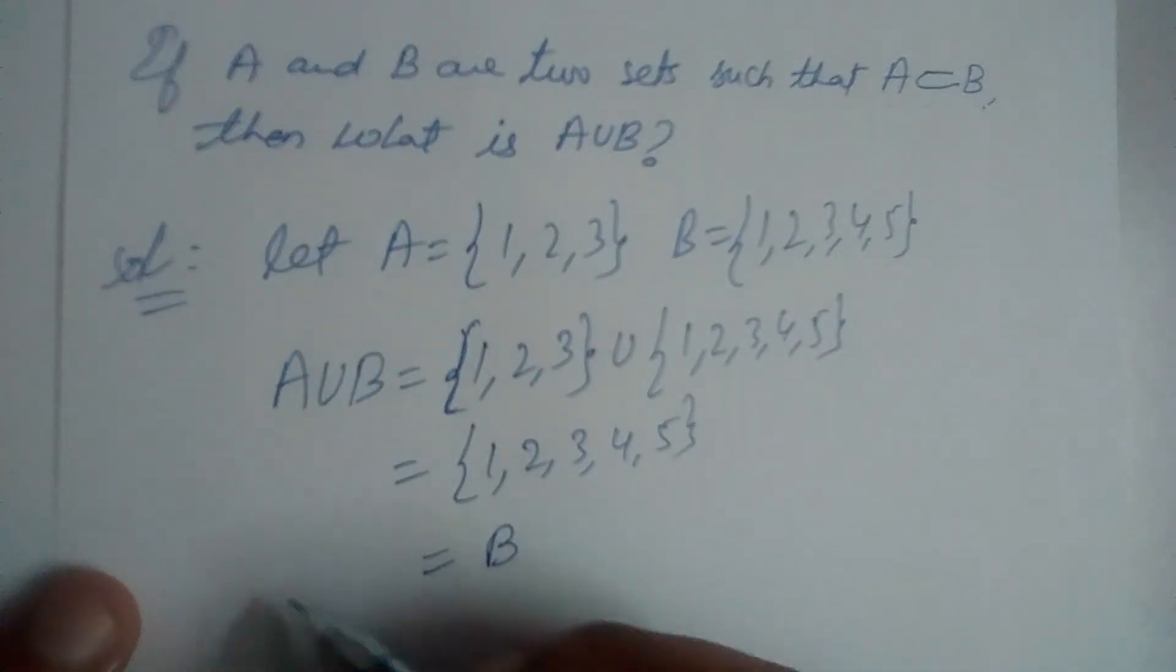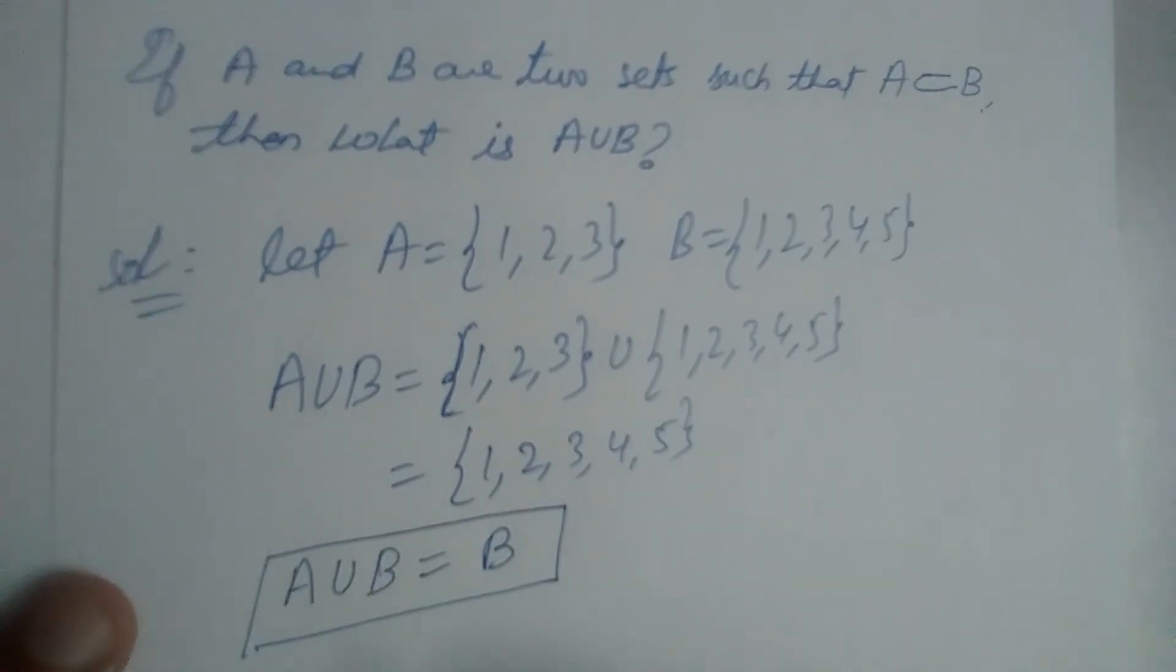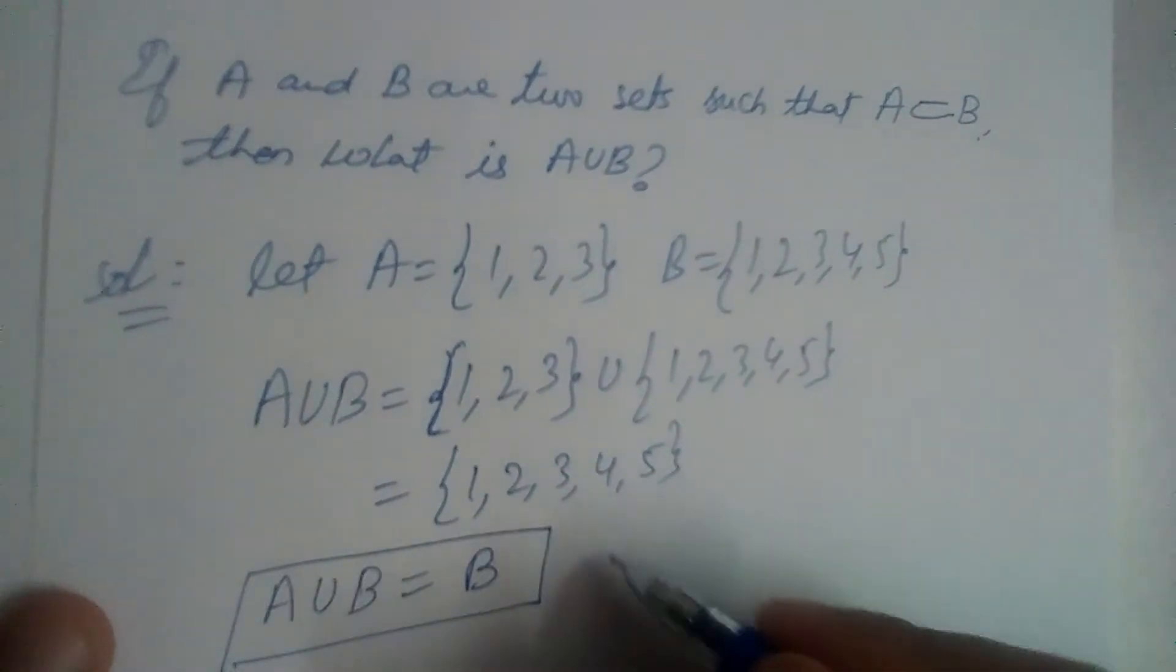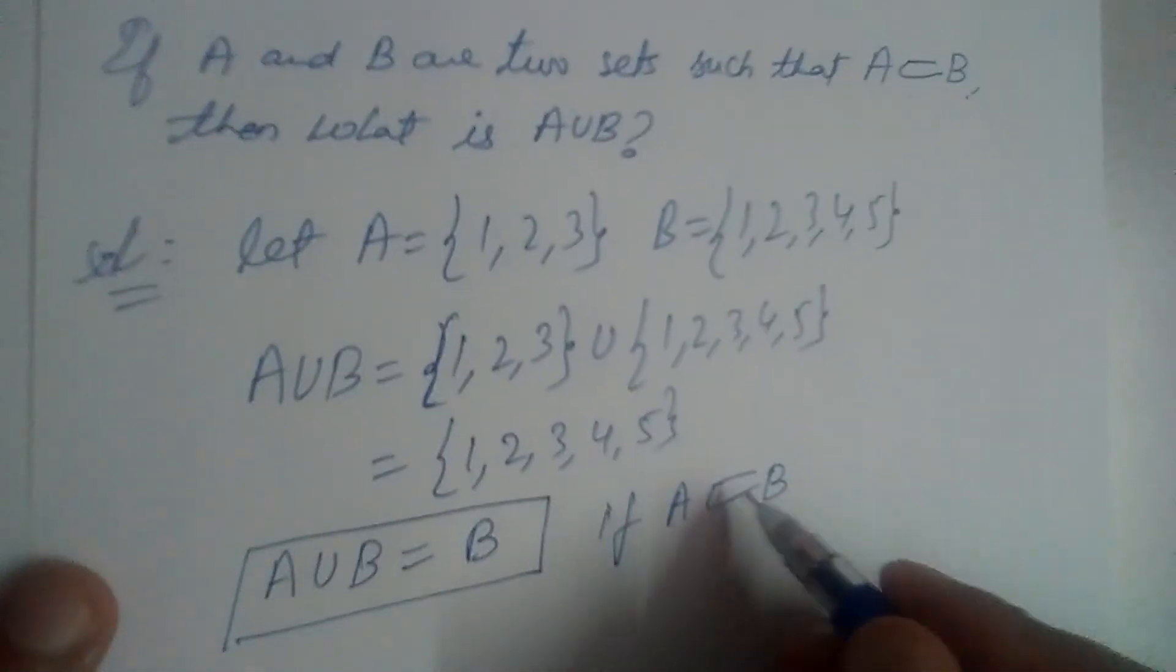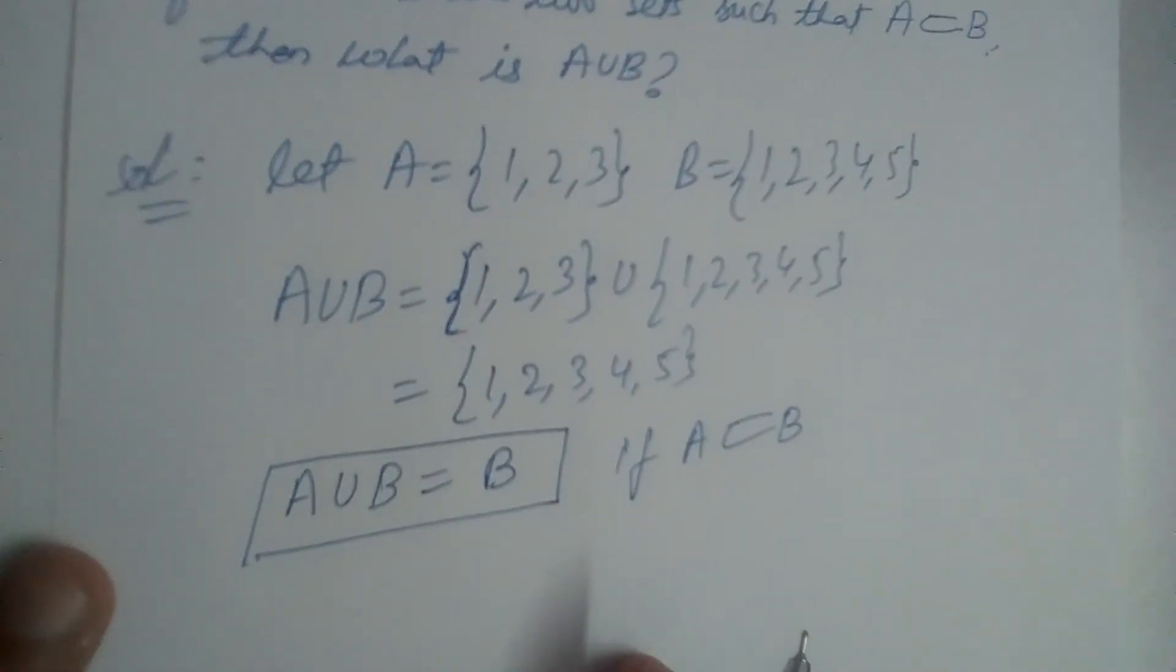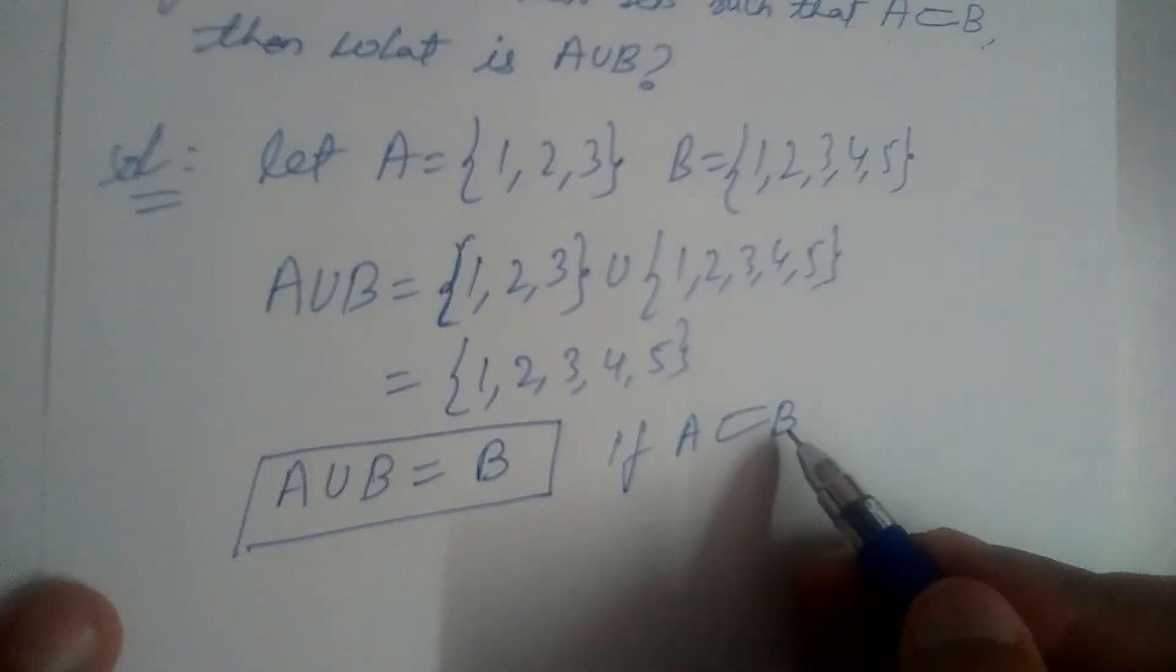B is {1, 2, 3, 4, 5}, so we got B again. So A union B is equal to B. This is always true if A is a subset of B.